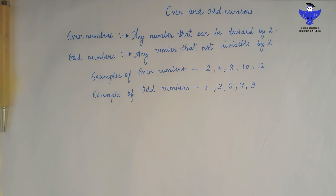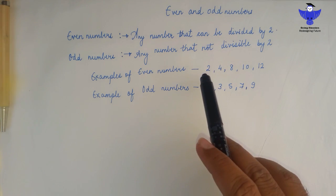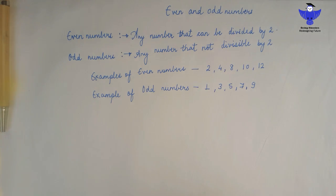Some examples of even numbers: 2, 4, 8, 10, 12. If you divide these numbers by 2, they are wholly divisible and the remainder will become 0.